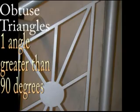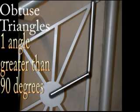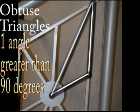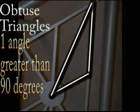In this triangle we notice that one of the angles is larger than 90 degrees. Whenever a triangle has an angle larger than 90 degrees, we have an obtuse triangle.